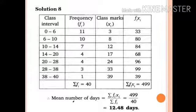fi xi: 11 into 3 equals 33, 10 into 8 equals 80, 7 into 12 equals 84, 4 into 17 equals 68, 4 into 24 equals 96, 3 into 33 equals 99, and 1 into 39 equals 39. Sum of frequency sigma fi equals 40. Sum of sigma fi xi equals 499. By direct method, mean number of days equals sigma fi xi upon sigma fi, that is 499 upon 40, which equals 12.48 days.